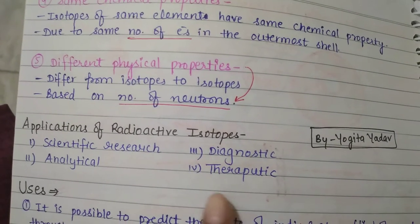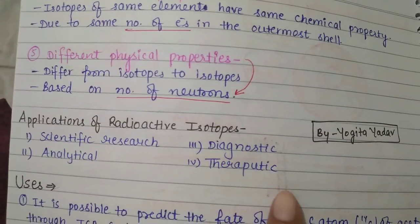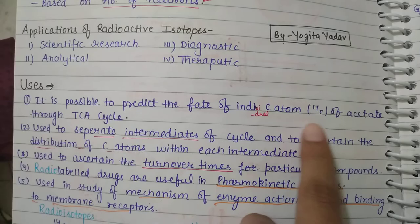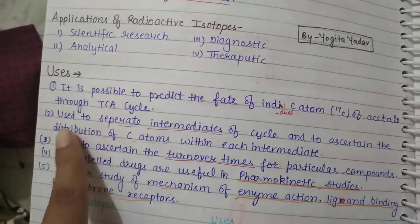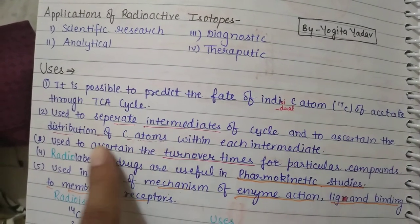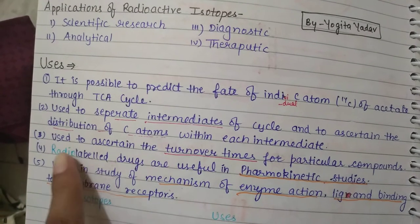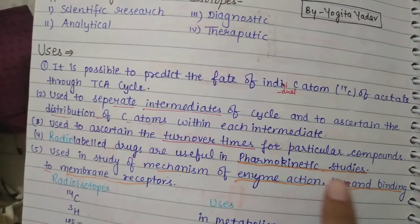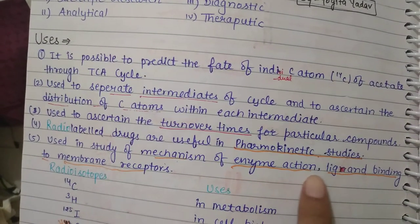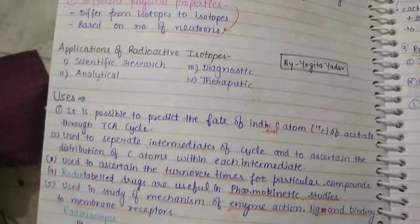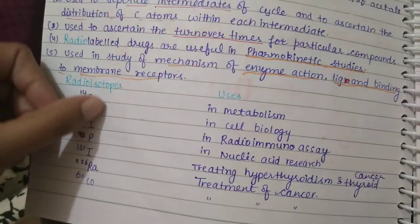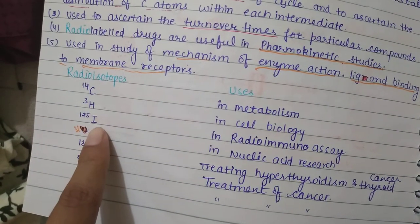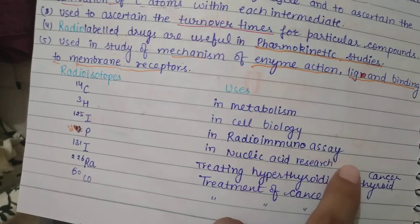Applications of radioactive isotopes include four main areas: scientific research, analytical, diagnostic, and therapeutic uses. It is possible to predict the fate of individual carbon atoms (C-14) of acetate through the TCA cycle, used to separate intermediates and ascertain the distribution of carbon atoms within each intermediate, and to determine the turnover time for a particular compound. Radiolabeled drugs are useful in pharmacokinetic studies and in studying enzyme action and ligand binding to membrane receptors. Examples: C-14 is used in metabolism studies, ³H (tritium) in cell biology, and iodine in radioimmunoassay.